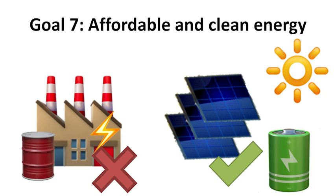Sustainable development goal seven is to ensure access to affordable, reliable, sustainable and modern energy for all. Targets for 2030 include access to affordable and reliable energy while increasing the share of renewable energy in the global energy mix. This would include improving energy efficiency and enhancing international cooperation to facilitate more open access to clean energy technology and more investment in clean energy infrastructure. Plans for this goal call for particular attention to infrastructure support for the least developed countries, small islands and landlocked developing countries. As of 2017, only 57% of the global population relies primarily on clean fuels and technology for cooking, falling short of the 95% target.